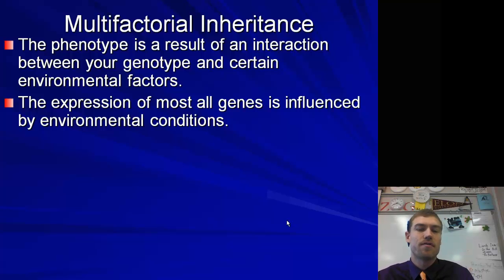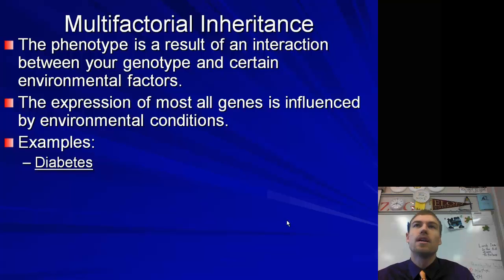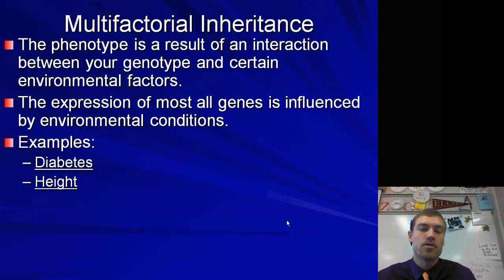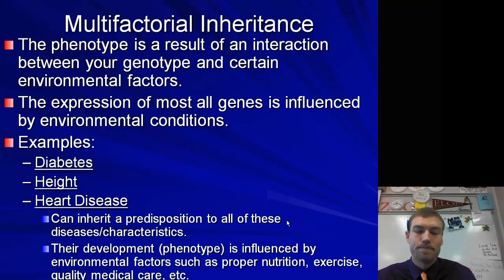We also have multifactorial inheritance. This is where the phenotype is a result of an interaction between your genotype and certain environmental factors. The expression of most genes is influenced by some sort of environmental conditions, so in a lot of ways most genes are multifactorial. Some examples would be diabetes, which can be triggered by a virus or eating improperly. Height is also affected — if someone doesn't get correct nutrients growing up, even though their genes say they could reach six feet, they could be shorter. Heart disease risk increases with eating high cholesterol and high fatty foods. You might have a predisposition, but you also need the correct environmental conditions to trigger those traits showing up.